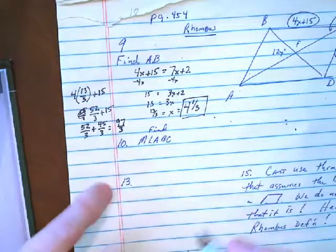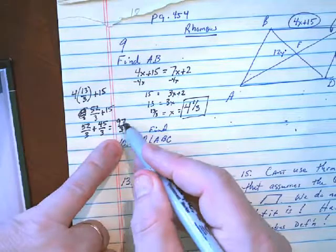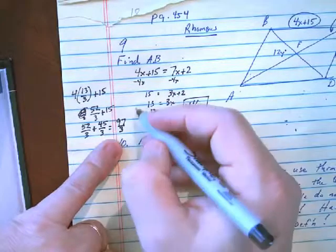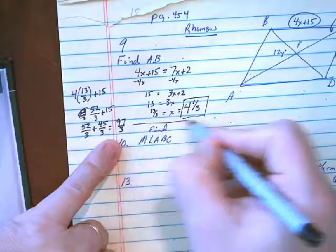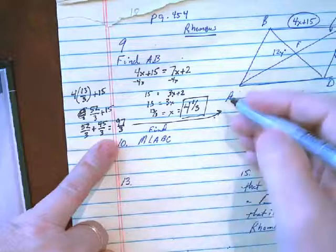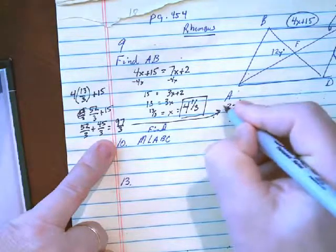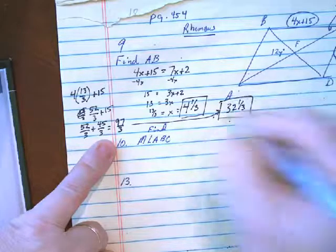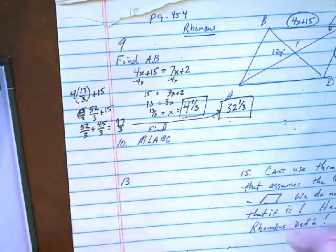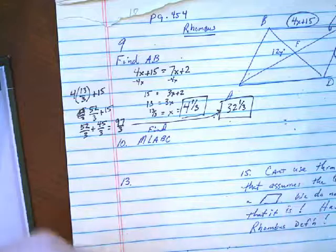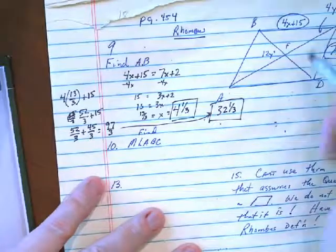Which is 97 over 3. Okay, well not quite 33. 33 would be 99. And so let's see, let's simplify that. We're gonna end up with 32 and 1/3. That's the final answer. Yuck. I know, fractions.